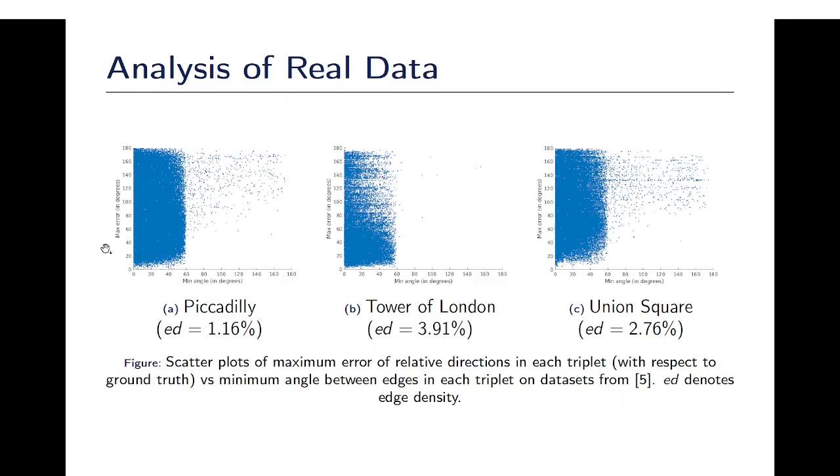Here we also plot maximum errors in the input directions with respect to ground truth. This reveals that there is no correlation between the skewed triangles and the presence of outliers.